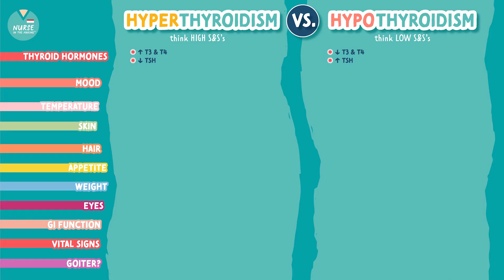Now let's compare their moods. For hyperthyroidism, these clients are going to be super excited — remember they have a lot of energy — they're going to be nervous and irritable. For hypothyroidism, think of a low mood: they're going to be depressed and fatigued.